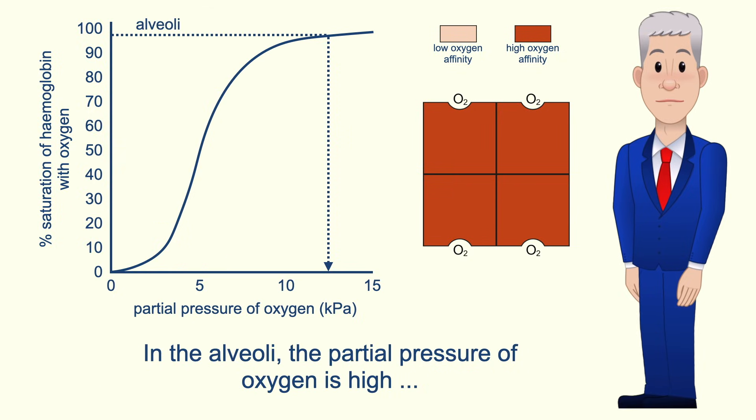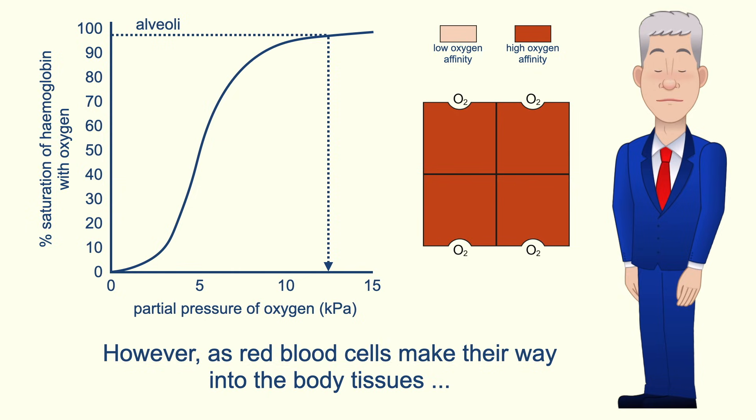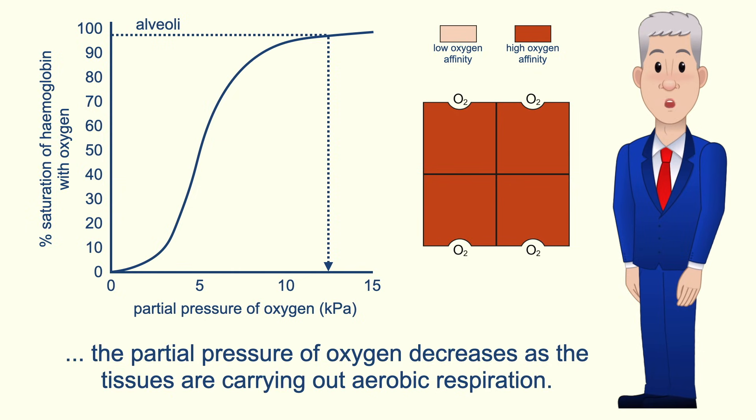In the alveoli the partial pressure of oxygen is high and the haemoglobin in red blood cells is around 97% saturated. However, as red blood cells make their way into the body tissues, the partial pressure of oxygen decreases as the tissues are carrying out aerobic respiration.